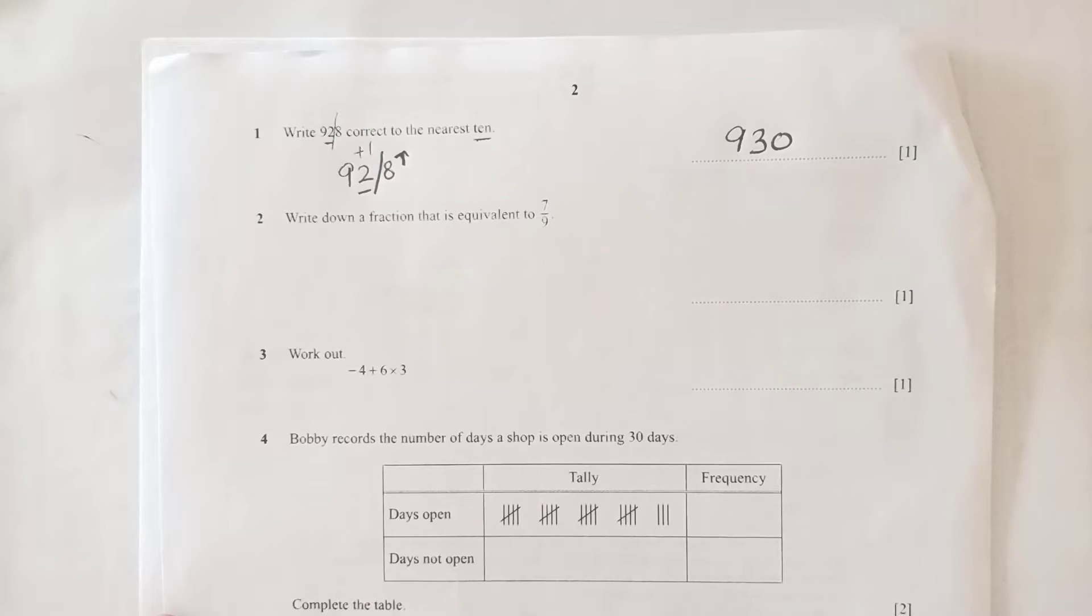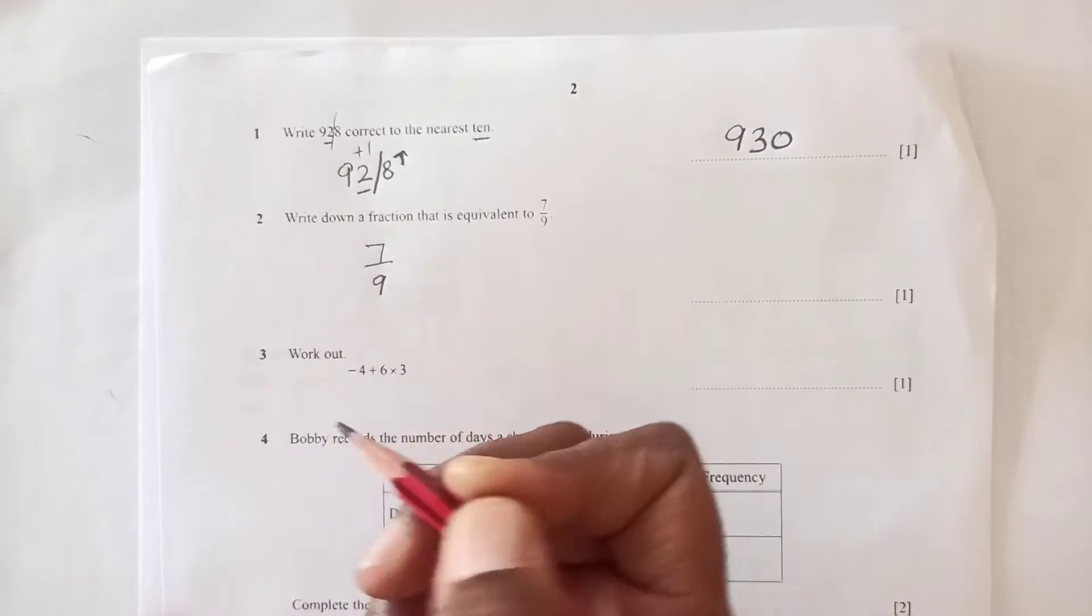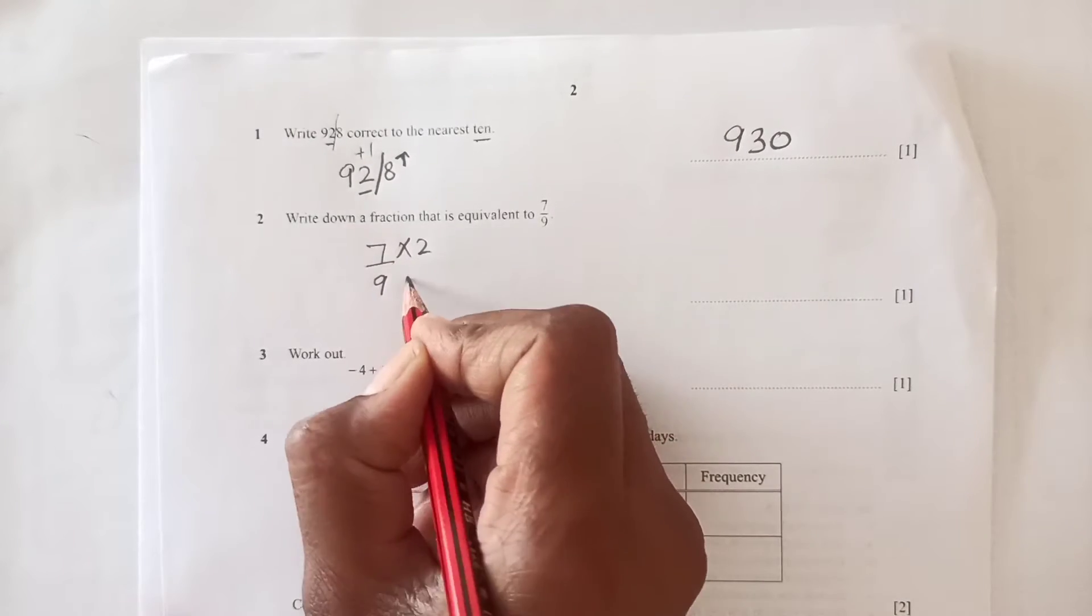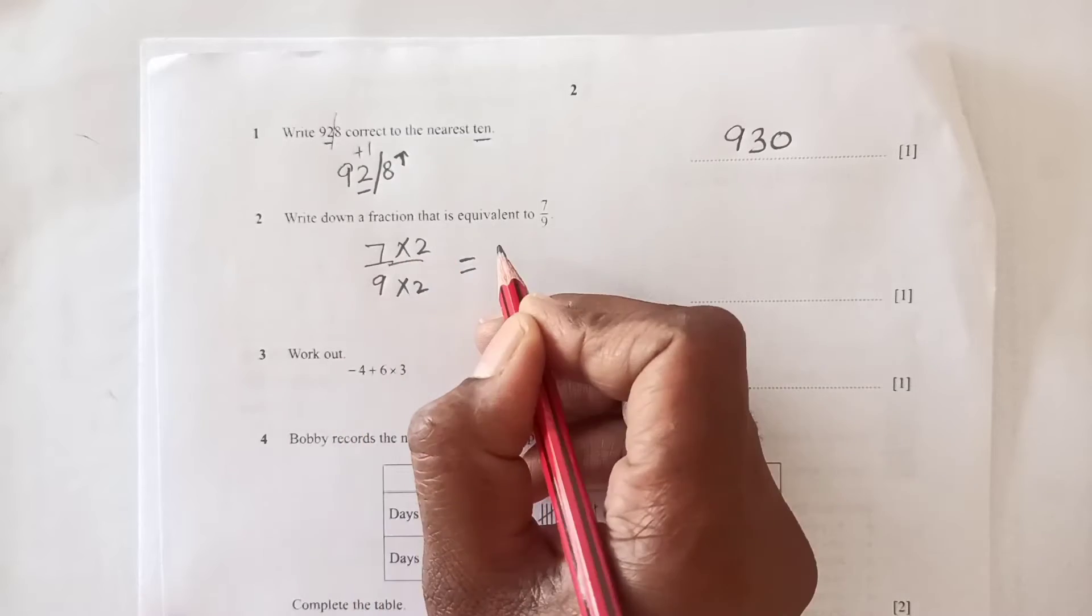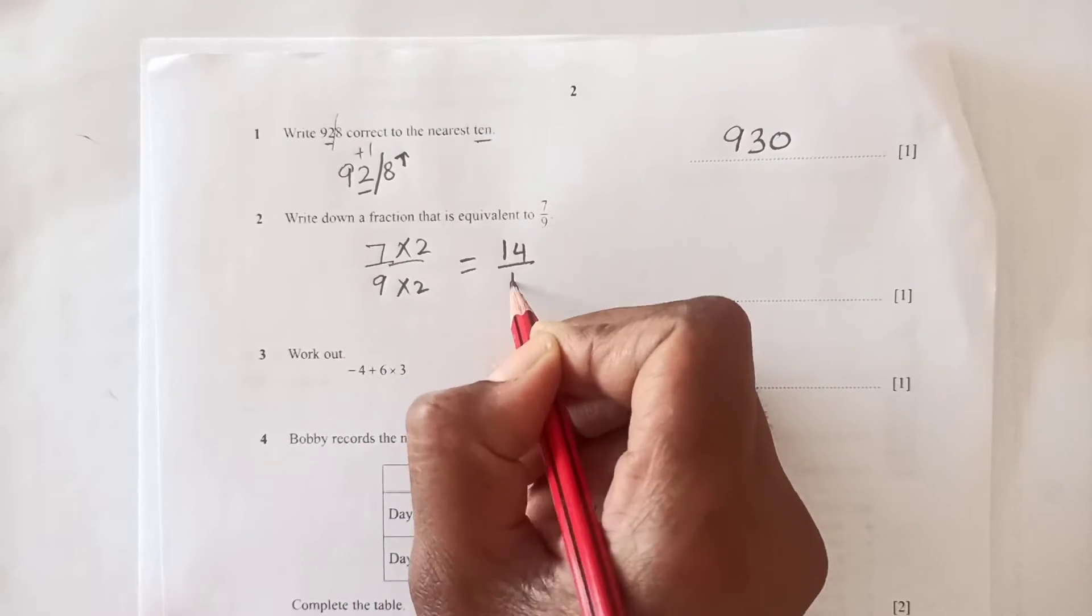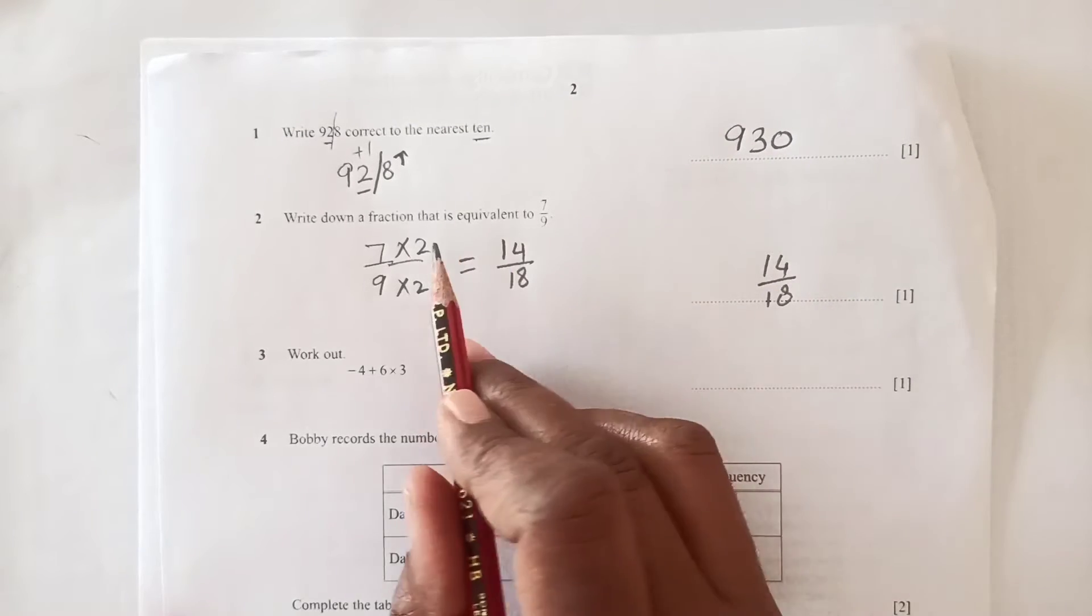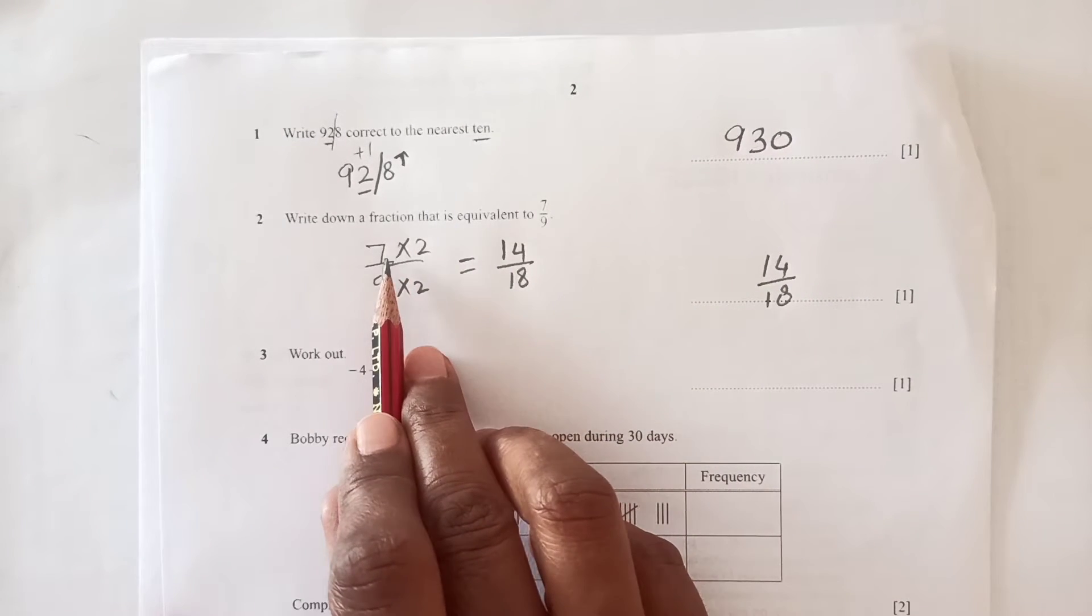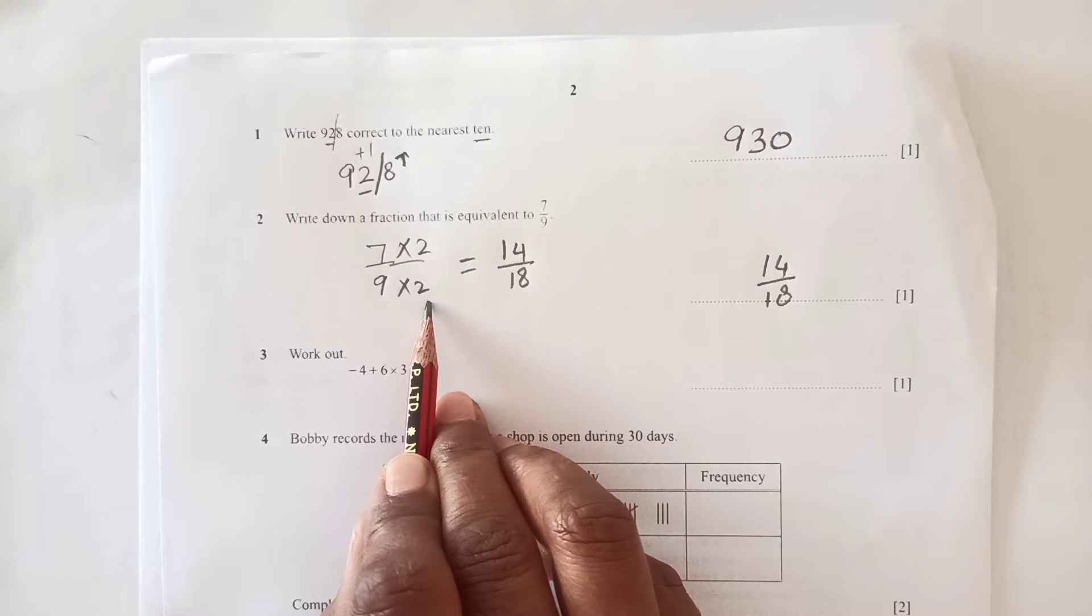Question 2: write down a fraction that is equivalent to 7 over 9. You can multiply any digit to both numerator and denominator, so this is 14 over 18. Your answer may be different because if you multiply by 3, you will get 21 over 27.